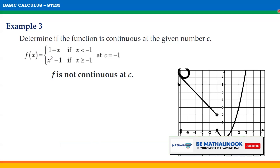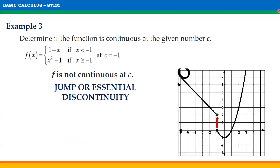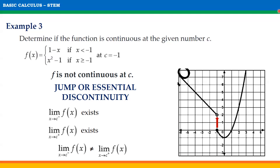Hence, f is not continuous at C. We can see from the graph that there is a jump at x = −1. This discontinuity is an example of jump or essential discontinuity, which is another type of non-removable discontinuity. This happens when the left-hand limit and right-hand limit both exist but are not equal to each other.